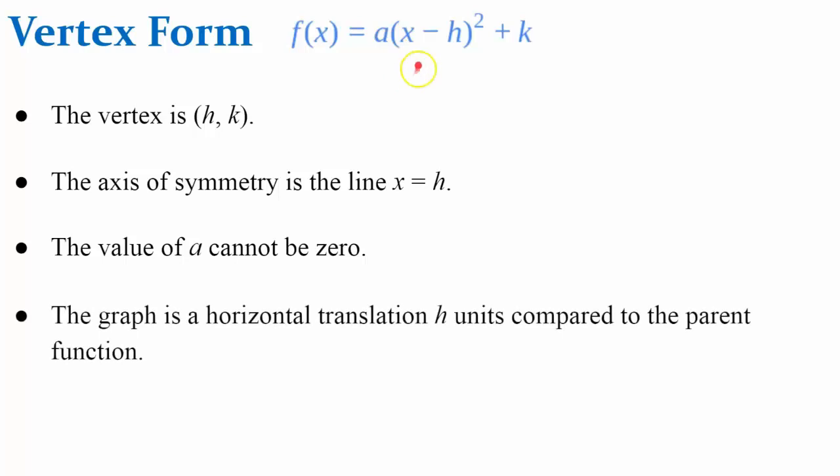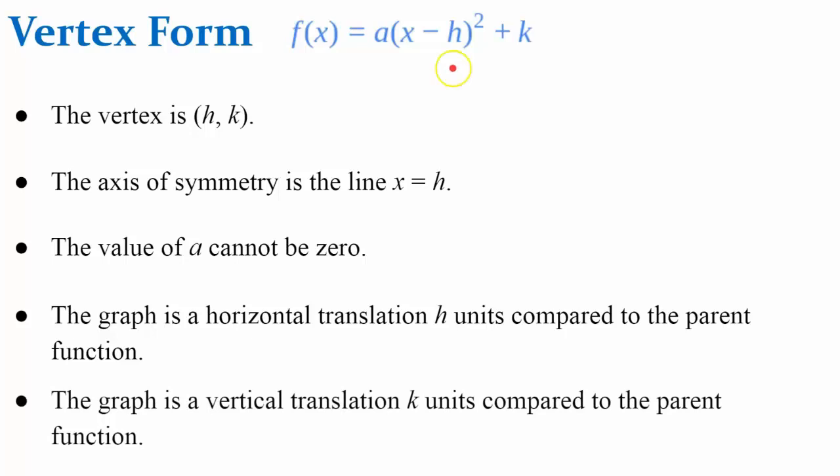The graph is a horizontal translation left or right h units compared to the parent function. And the graph will be a vertical translation k units up or down depending on the value of k compared to the parent function.